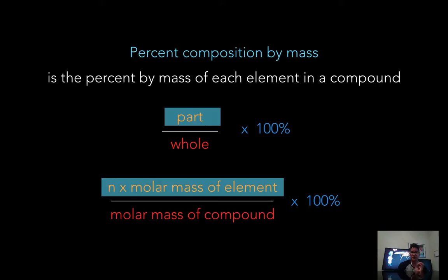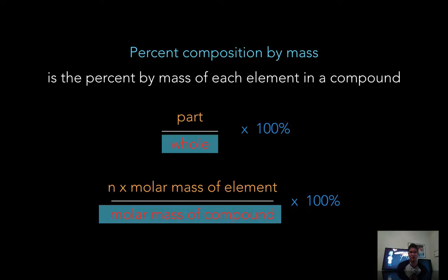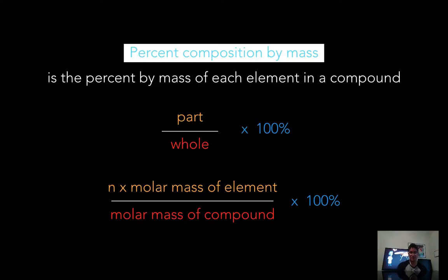Divide by molar mass of the entire compound. So our part is the molar mass of the element, and it can be any of the elements. For H2O for example, there's two elements there, and what element you put in the numerator position will depend on the question being asked. The whole would be the entire molar mass of the compound. That's percent composition by mass.